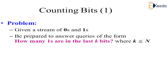Counting bits: the problem is given a stream consisting of zeros and ones. You may be wondering where these zeros and ones are coming from. They are coming from any streaming or real-time system where we receive those bits. For example, there is a website where people are liking and disliking a particular post. In a streaming system, we cannot store all those zeros and ones in real-time — it is quite difficult. So, how do we tackle this problem?